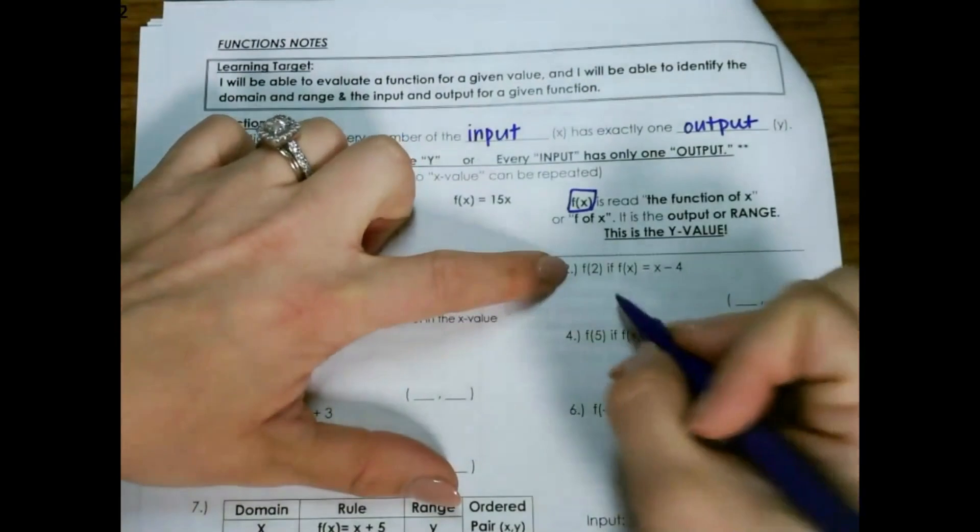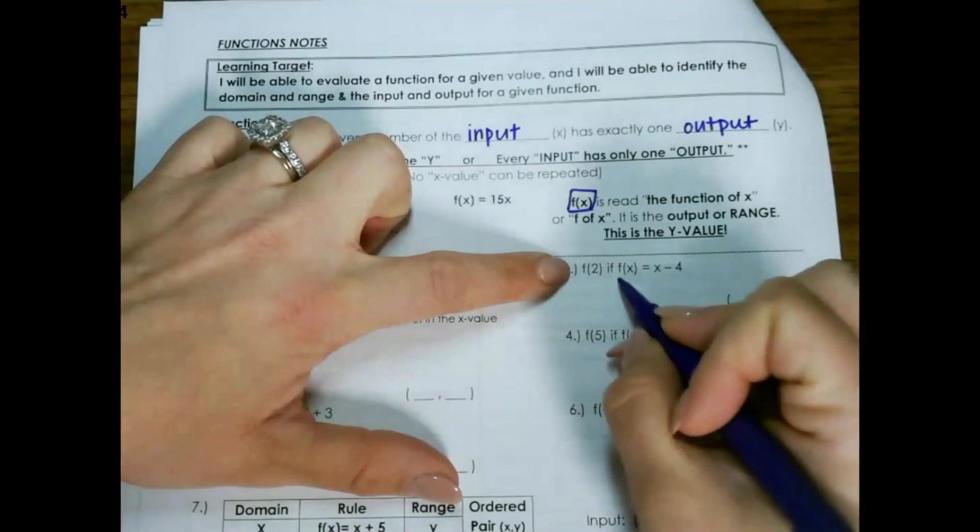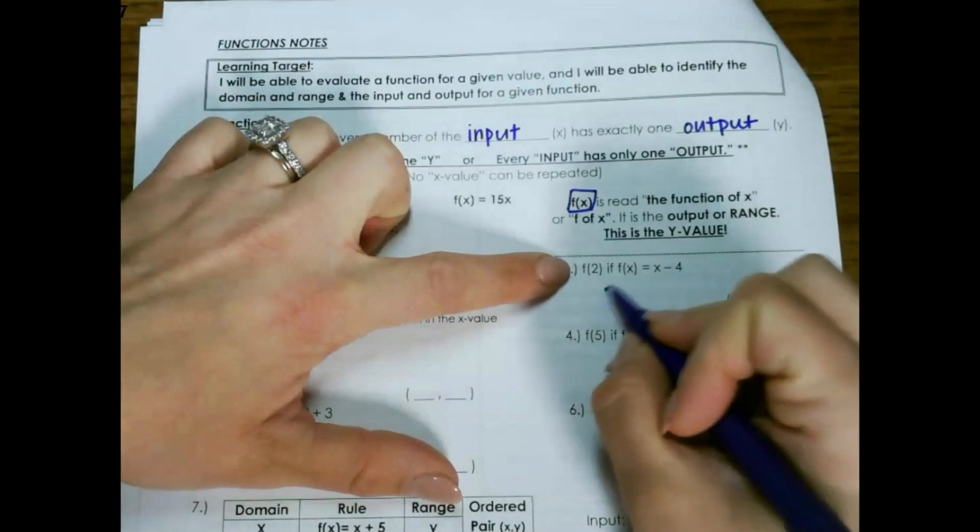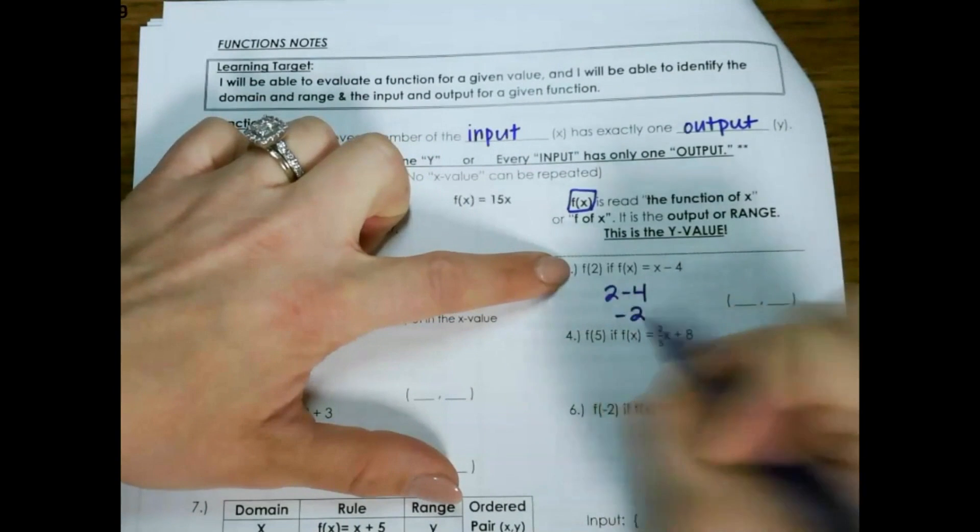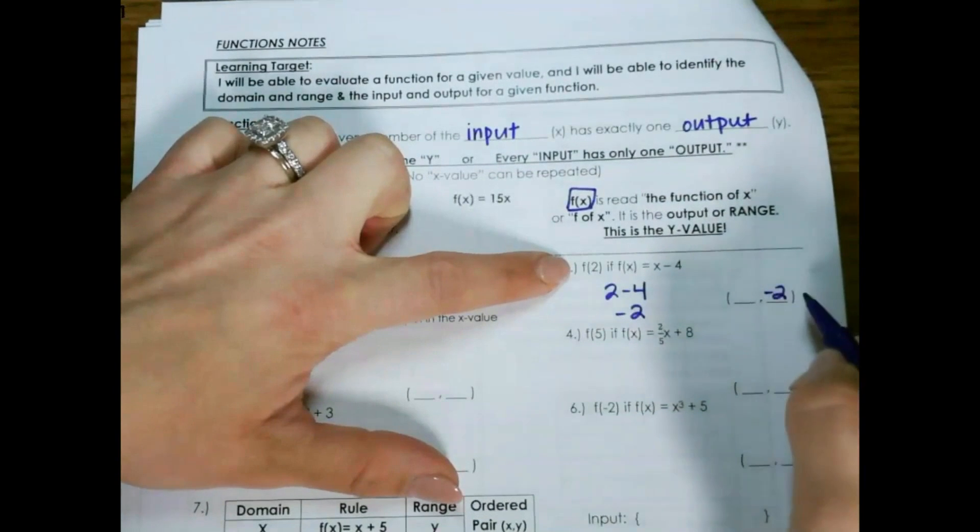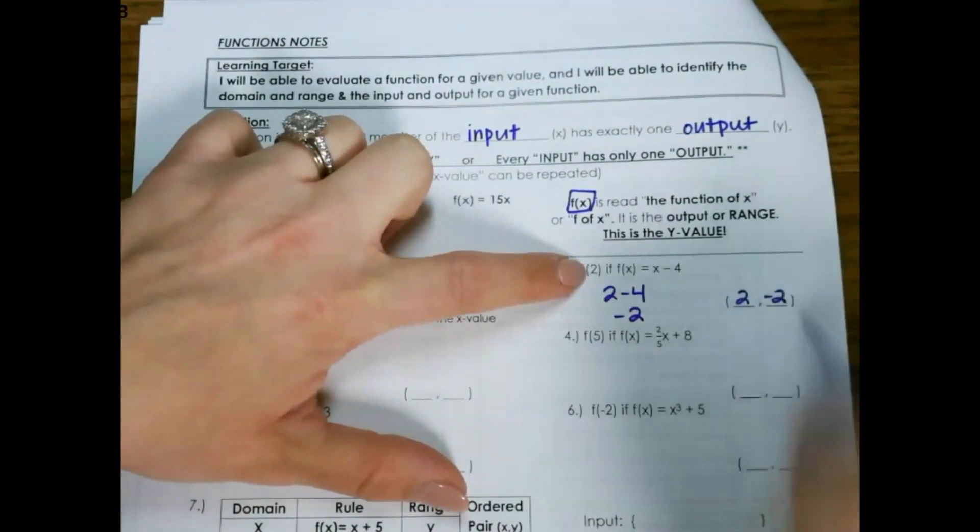For this next example, f of 2 if f of x is x minus 4. So 2 minus 4 is negative 2, so that's your y value, and our x value is 2.